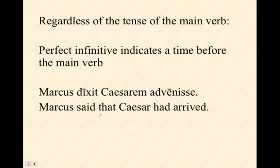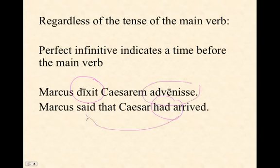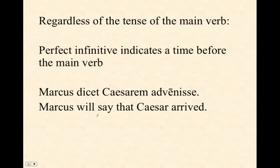When a perfect tense verb introduces: Marcus dixit Caesarem advenisse — Marcus said that Caesar had arrived, because the perfect infinitive must be past relative to a past tense introducing verb, meaning it must be more than perfect — that is, pluperfect. Using a future tense introducing verb allows a simple past: Marcus dicet Caesarem advenisse — Marcus will say that Caesar arrived.